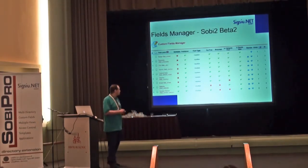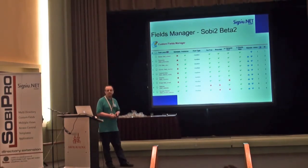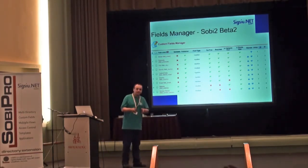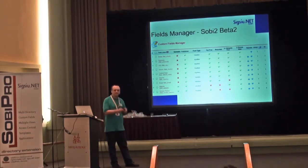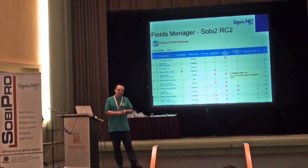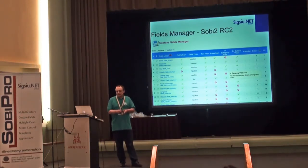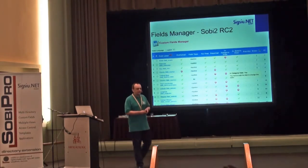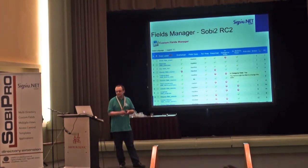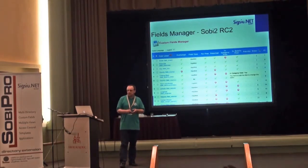But Sobi 2 was mainly designed to be used as a directory component, so we had a fixed first set of fields that was always there — we could disable them, but we relied on them. As Joomla users are very inventive and started using Sobi 2 for many other purposes, it was quite annoying that, for example, someone with a real estate directory had a set of fields they didn't even use. Therefore, in some future version of Sobi 2, we unlocked the field manager and made it possible to add and remove almost all custom fields.